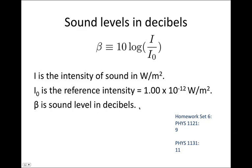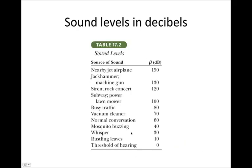Beta is the sound level in decibels. To practice using this equation, you can try homework set 6: for FIS 1121, question 9; for FIS 1131, question 11. To give you some idea of the numbers we're dealing with: a nearby jet airplane is 150 decibels, a jackhammer is 130, a siren is 120. For very quiet sounds: a mosquito is around 40, a whisper is 30, and rustling leaves are around 10 decibels.